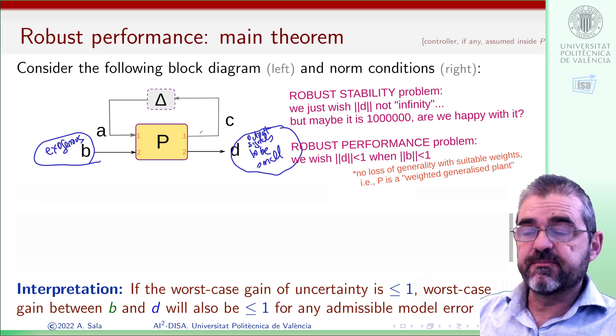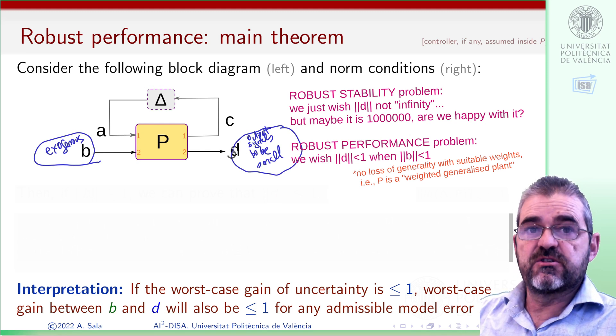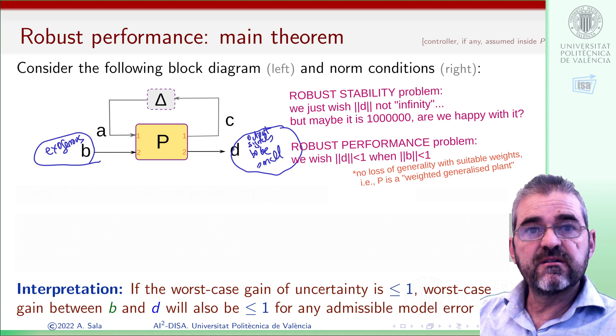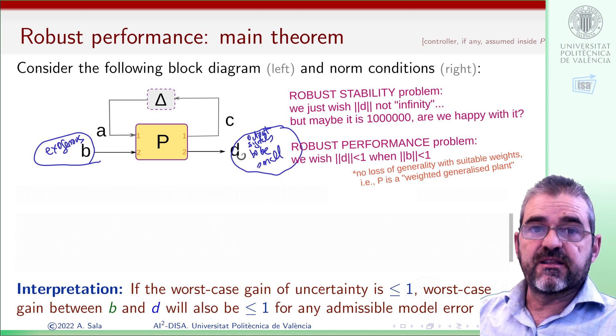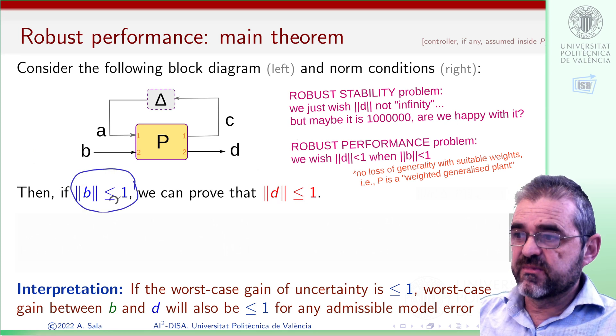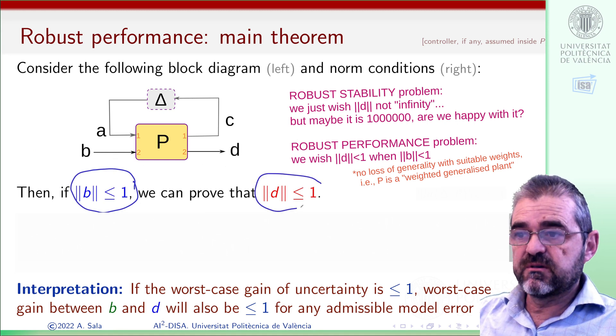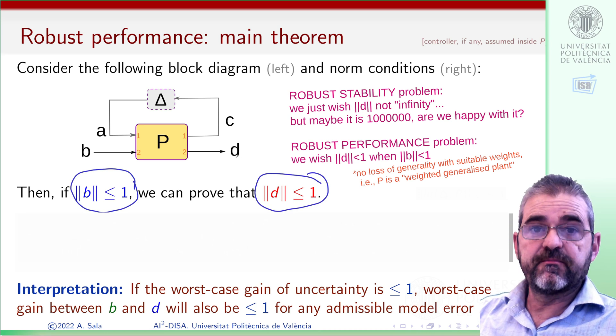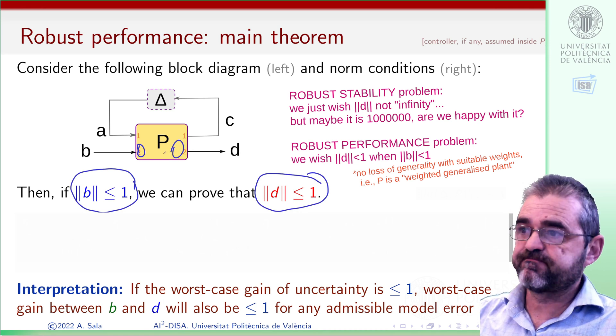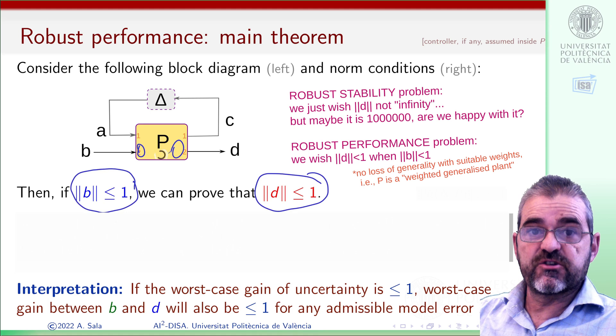Then, robust stability would mean guaranteeing that the norm of D is not infinite, so that D is just bounded when B is bounded. But if the norm of D is not infinite but is 10 trillions, then maybe that does not mean that our loop is performing well. So with suitable scalings, we will assume that the worst-case norm of B is 1, the maximum size, and our goal is proving that the size of D is less than 1. With suitable weights inside here, we are not losing any generality, because